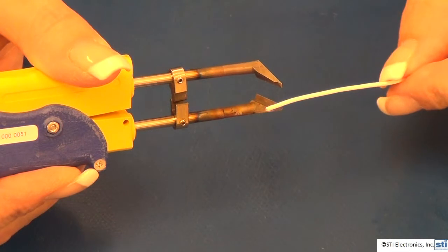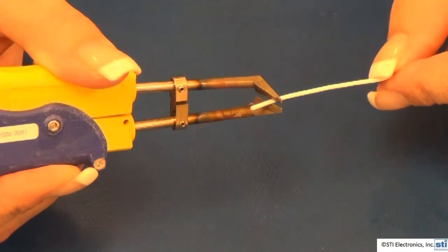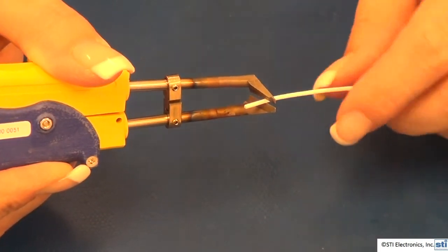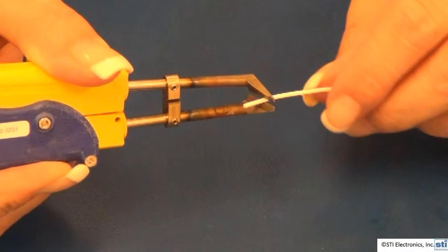When using thermal strippers, the wire should be inserted to the specified strip length, or you could use the wire stops on the device. Now, we gently squeeze the tweezer hand grips together, and this will allow the hot tweezer tips to melt through the insulation.